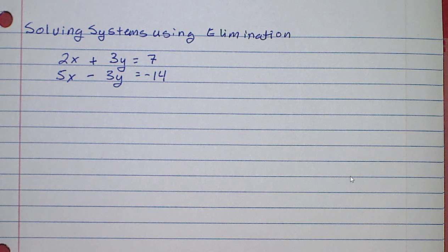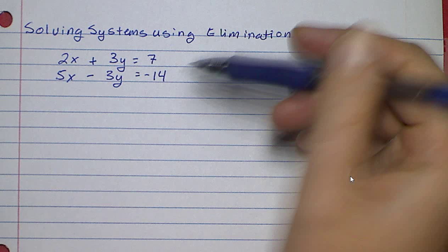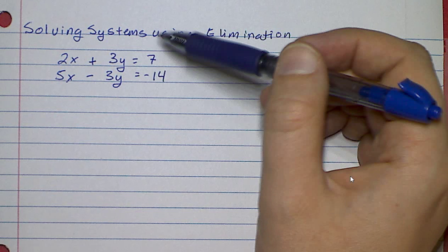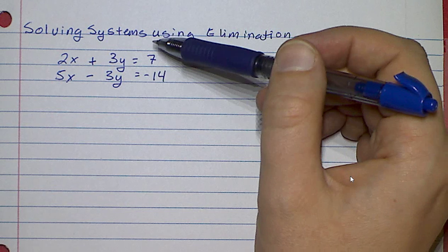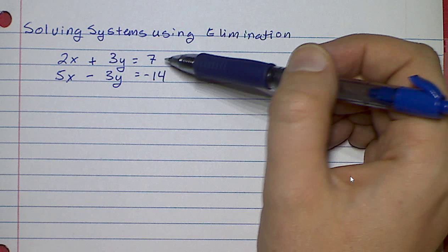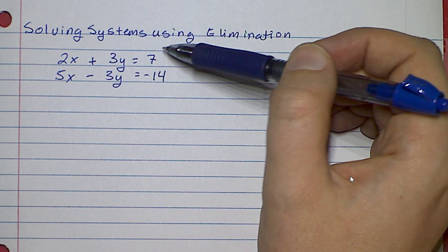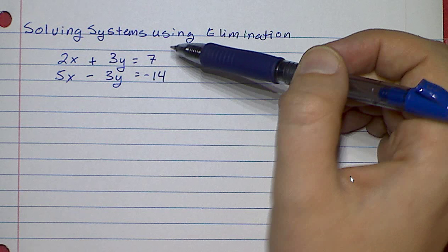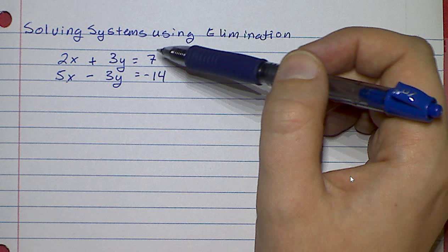Now, with what I've taught you so far, you couldn't use substitution with this because neither of these two equations are set up so that you have either of them being x equal or y equal. So you don't have it set up right away so that you could substitute one of these equations in for a variable into the other equation.